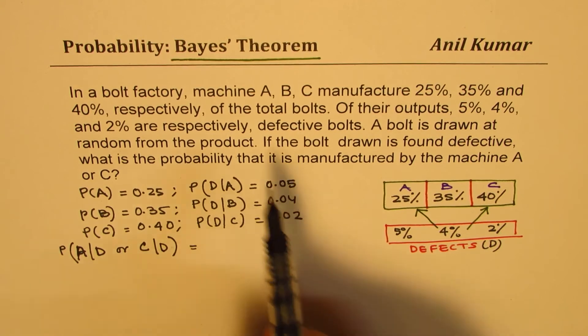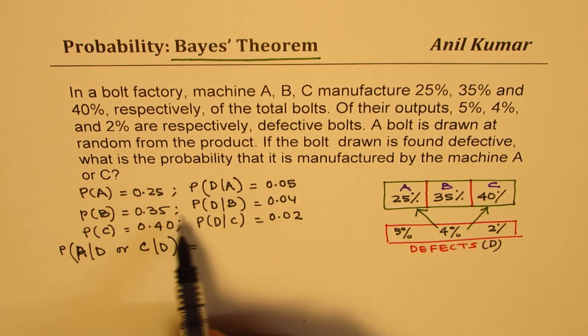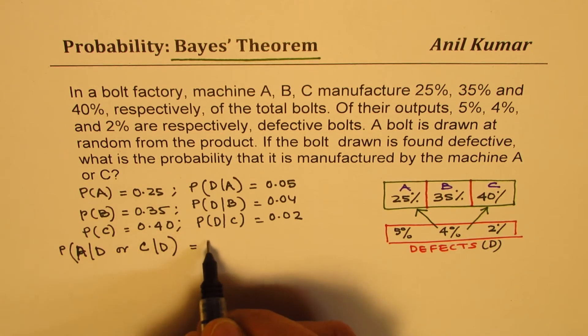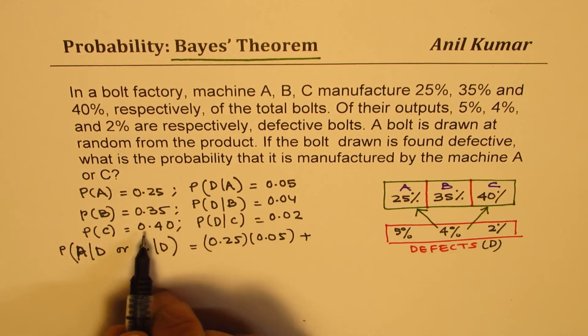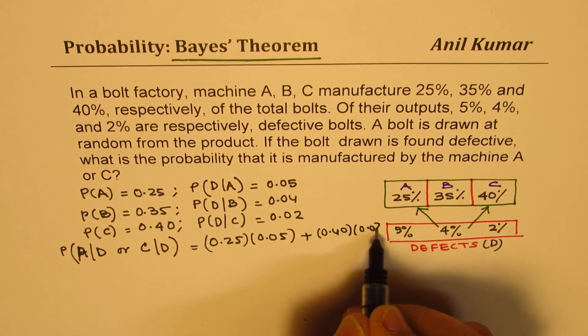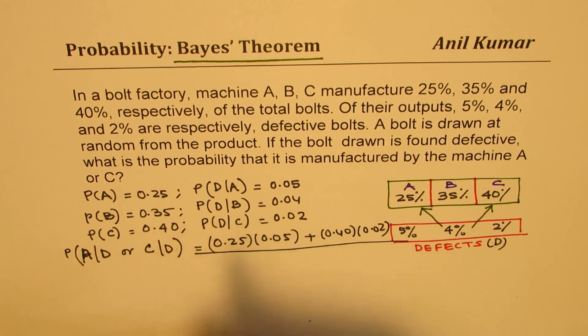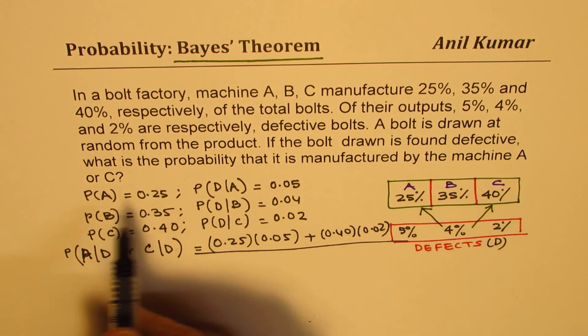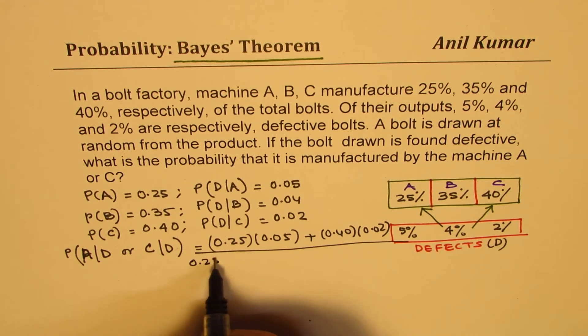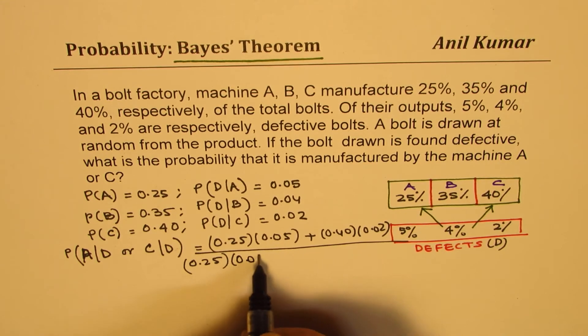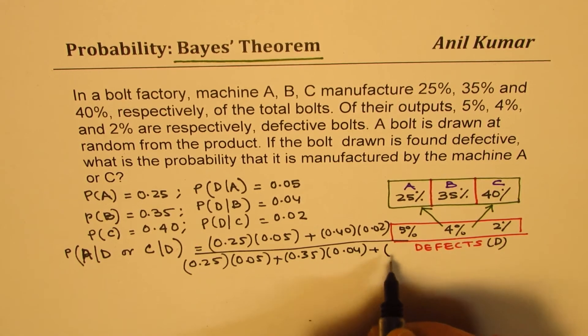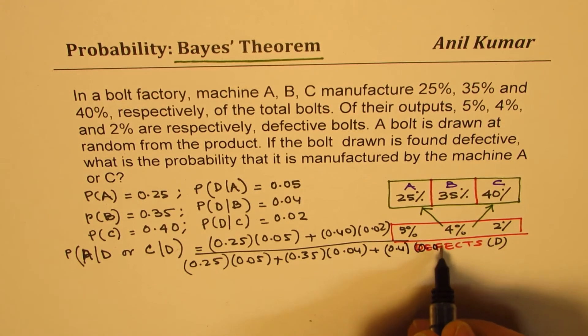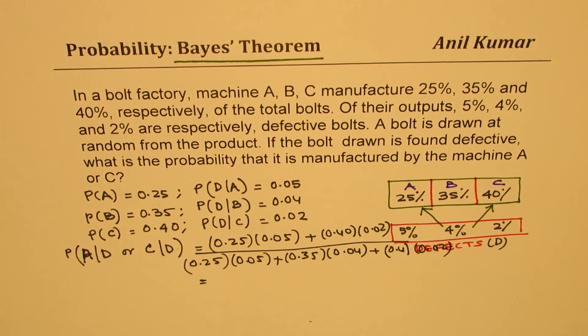Using Bayes' theorem, we multiply these probabilities, keep them in the numerator, and all the sum in the denominator. So it is 0.25 times 0.05 plus 0.40 times 0.02 divided by the sum of these products. Because the defect could only come from A, B, or C, it would be 0.25 times 0.05 plus 0.35 times 0.04 plus 0.40 times 0.02. We need the calculator to calculate this answer.